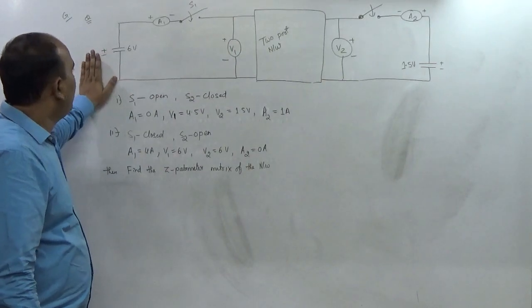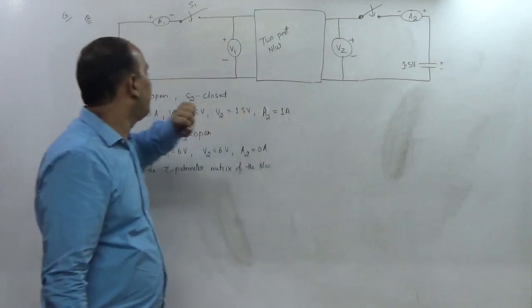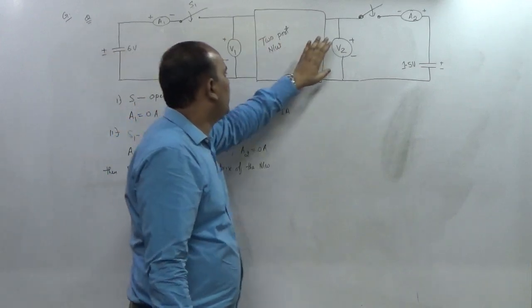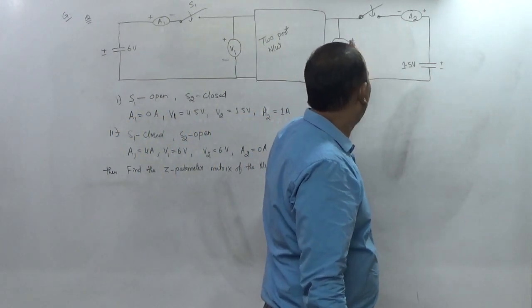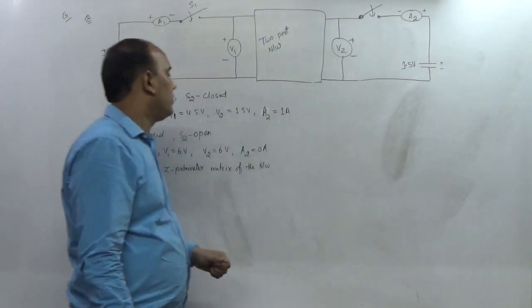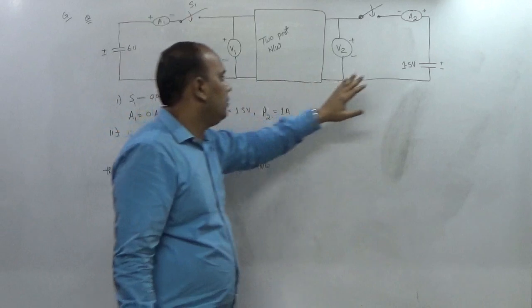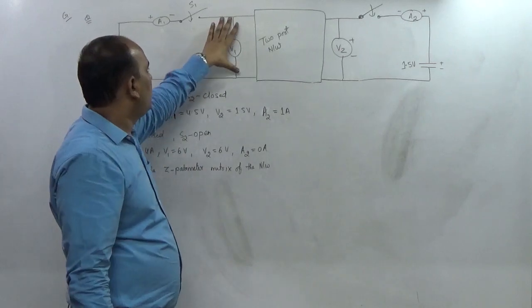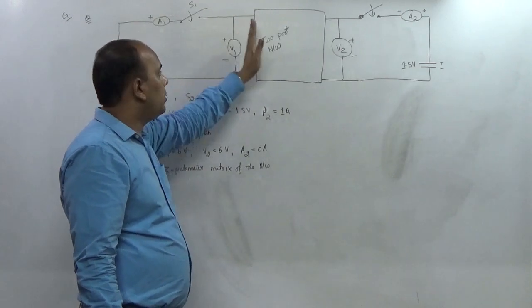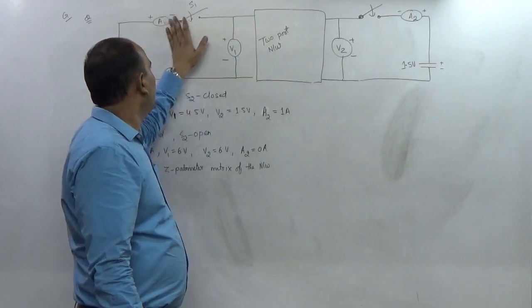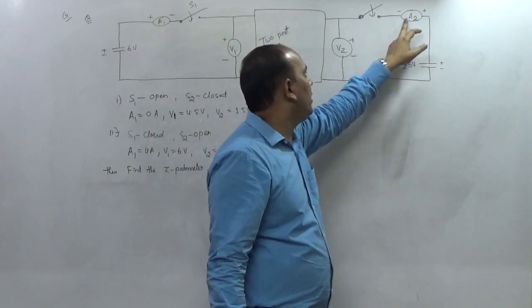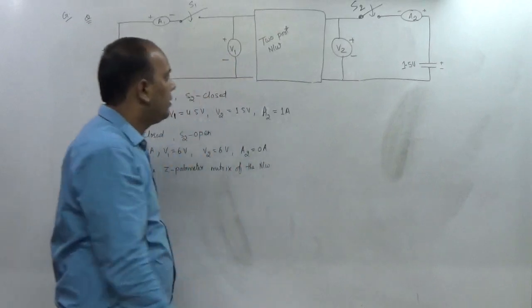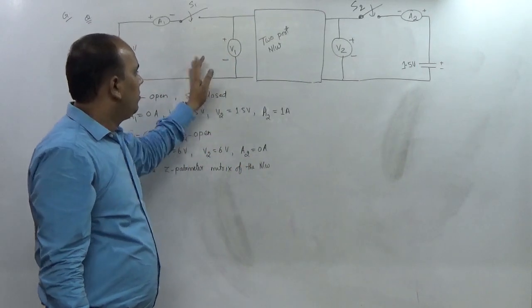The question involves a 2-port network with a 6-volt source connected at one port and a 1.5-volt source at the other. An ammeter, voltmeter, and voltage terminals V1 and V2 are connected, along with two switches S1 and S2. Some reference data are given with respect to this network.